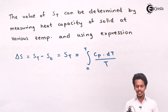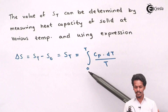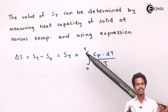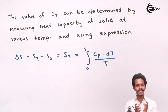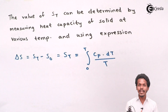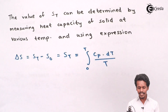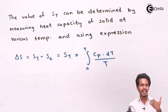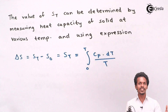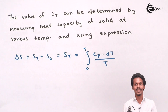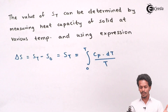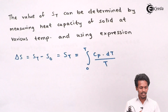The value of ST — the entropy at a desired temperature — can be determined by measuring the heat capacity of the solid at various temperatures and integrating it, with the lower limit being zero and the upper limit being T. By integrating the heat capacity over this range, we can calculate the change in entropy of that solid, and since the entropy at zero Kelvin is zero, we can determine the entropy at any desired temperature.